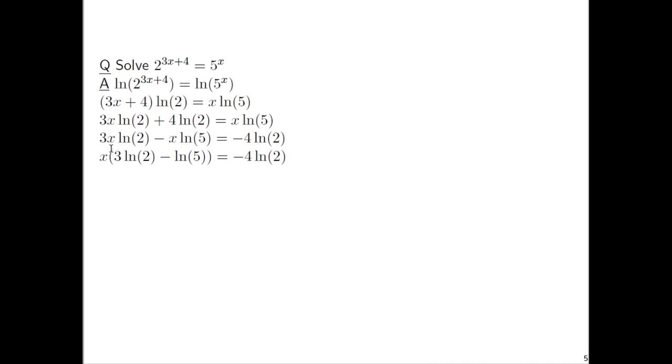Now, look what happened. We went from the previous equation where x was written twice to this new equation where x is only written once. And we've got x times this stuff, all this in parentheses. I'd like you to recognize that as being a number. We just need to divide both sides by that number. So we'll have x equals the fraction negative 4 times ln of 2 all over 3 times ln of 2 minus ln of 5. And we're done.